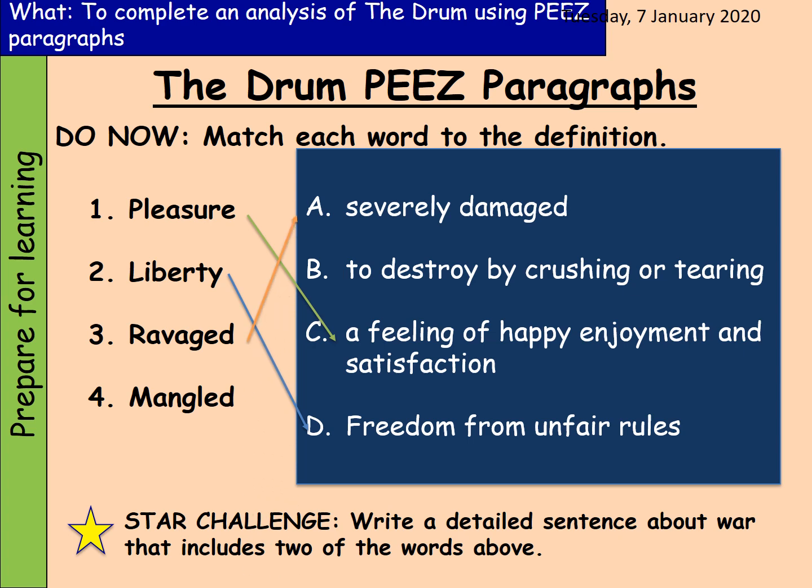Three, ravaged means something is severely damaged. You might say the cliffs were ravaged by the sea — as they erode away, they're being ravaged by the sea. And then finally, four is B: mangled, which means to destroy by crushing or tearing. That's obviously included within the poem itself, where we talk about the mangled limbs of the young men.